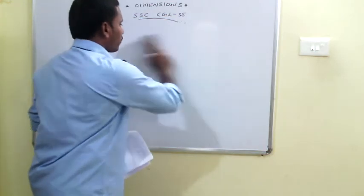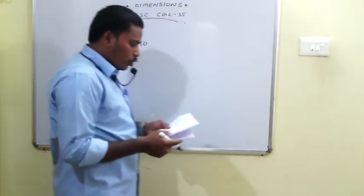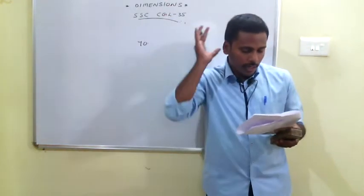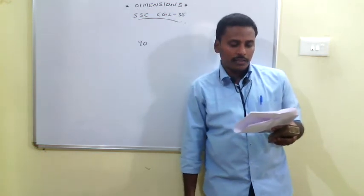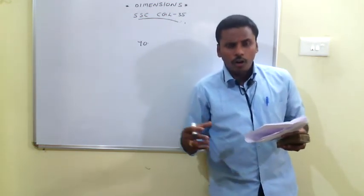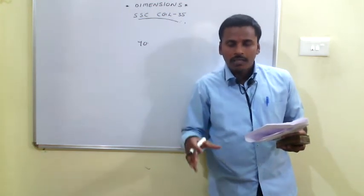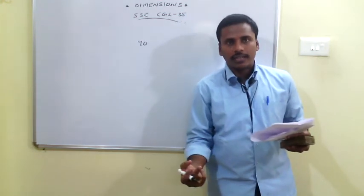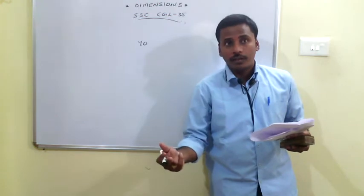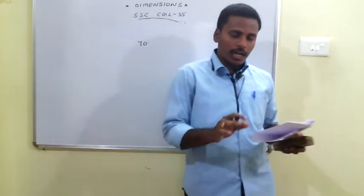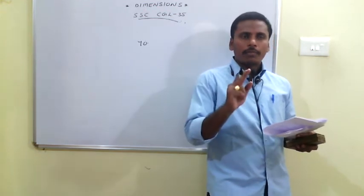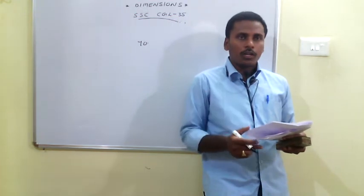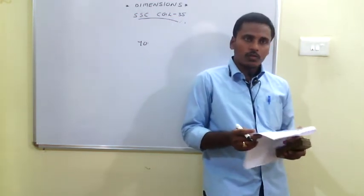The 70th problem: a transport company van can carry a maximum load of 12 tons. There are 24 sealed boxes, each weighing 5 tons. Since two boxes weigh 10 tons and three would exceed 12 tons, the van can carry only two boxes per trip. To cover all 24 boxes, it needs 24/2 = 12 trips. The answer is 12.